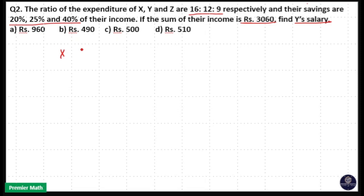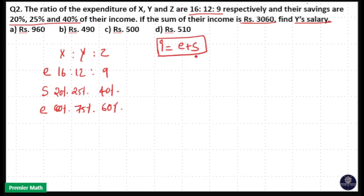So we have 3 people X, Y and Z here. Their expenditure is in the ratio 16 is to 12 is to 9. And their savings are 20%, 25% and 40%. That means their expenditures are 80%, 75% and 60%. Because income is equal to expenditure plus savings. If savings is 20%, expenditure will be 80%.